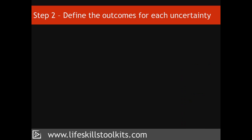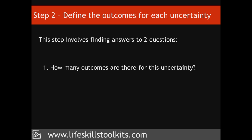Step 2: Define the outcomes for each uncertainty. The second step for creating a risk profile is to define the outcomes for each uncertainty. Defining outcomes involves obtaining answers to two questions: how many outcomes are there for this uncertainty, and what is the best way to describe each outcome?